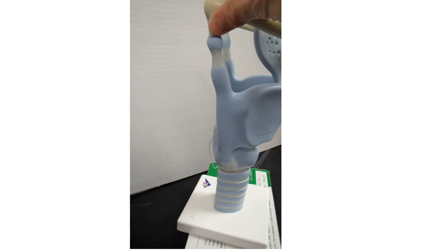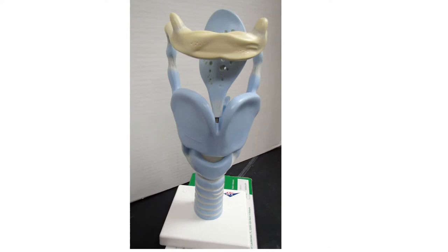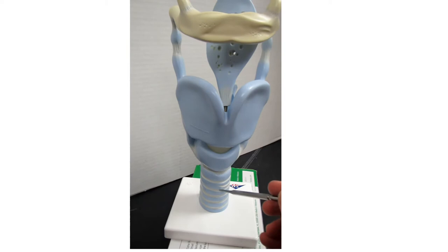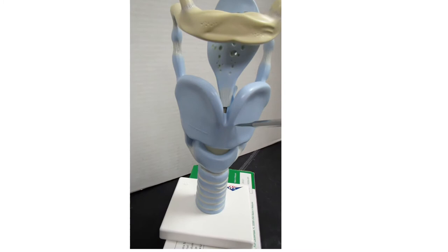These structures down here are not technically part of the larynx because they're part of the trachea or windpipe—cartilage rings that are part of the windpipe. So in the anterior view, we had our cricoid cartilage, our thyroid cartilage, our laryngeal protuberance or prominence, and our epiglottis.